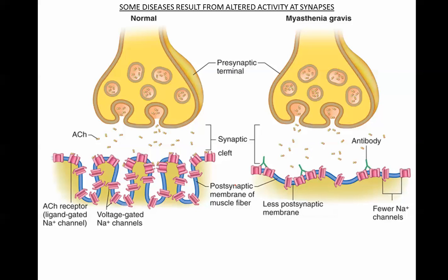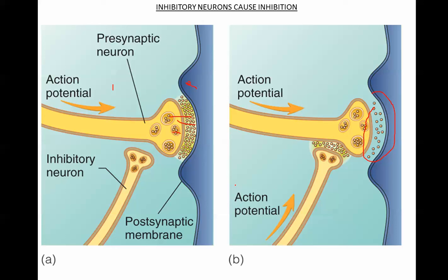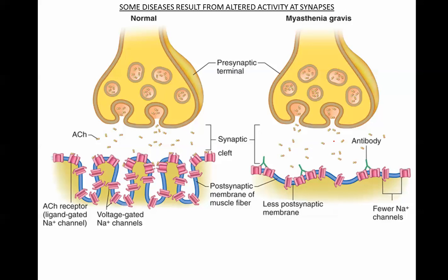Let's talk about diseases. The inhibitory mechanism can prevent the action potential from continuing. Some diseases basically alter the synapse. Look at this — there's acetylcholine. This is the normal one, but sometimes you have a disease where antibodies actually block the sodium gates. This prevents the ACH from binding to the receptor. If you don't bind to this receptor and the sodium gate, sodium doesn't pass through — the voltage gates don't open and depolarization doesn't occur.